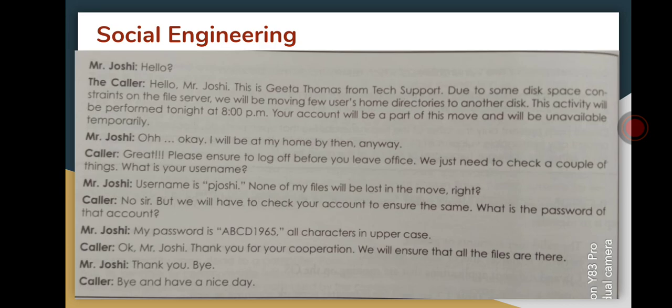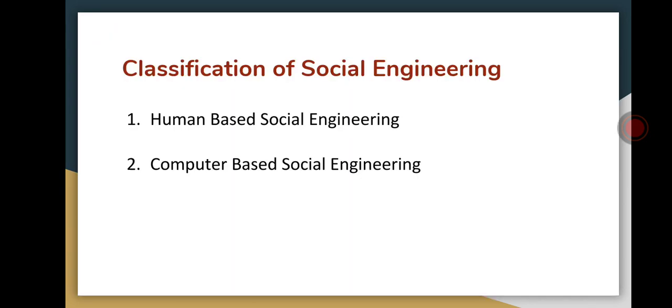By making these kinds of conversations, social engineers try to get your username and password. The classification of social engineering includes: first, human-based social engineering; and second, computer-based social engineering.